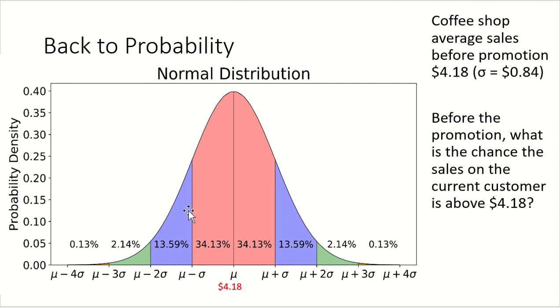If I go out one standard deviation each way, you can see there's 34% of all occurrences occur between $4.18 and $4.18 minus 84, which is going to be somewhere around $3.34. So 34% occur between the average and one standard deviation below. 34% occurs between the average and one standard deviation above.